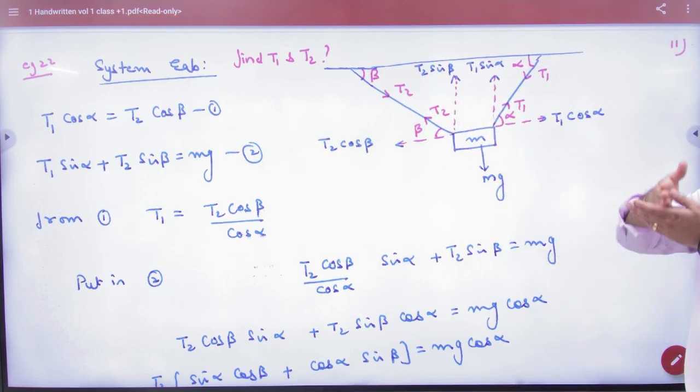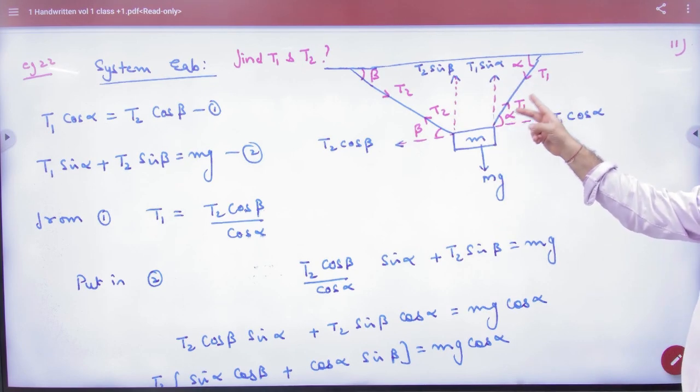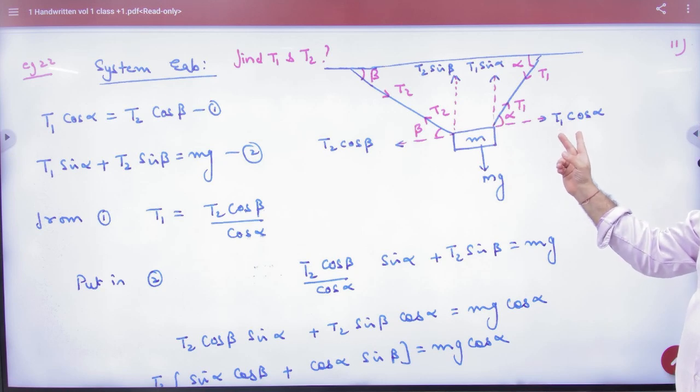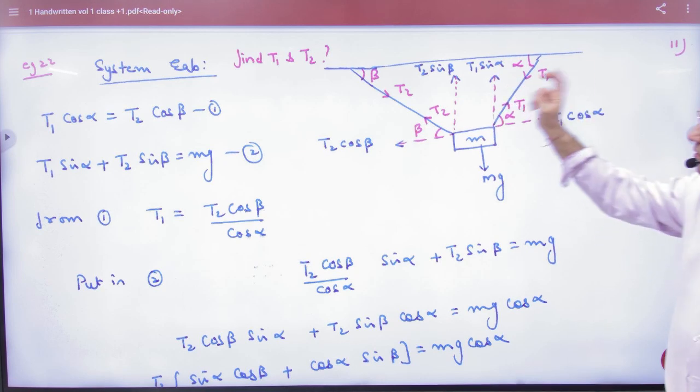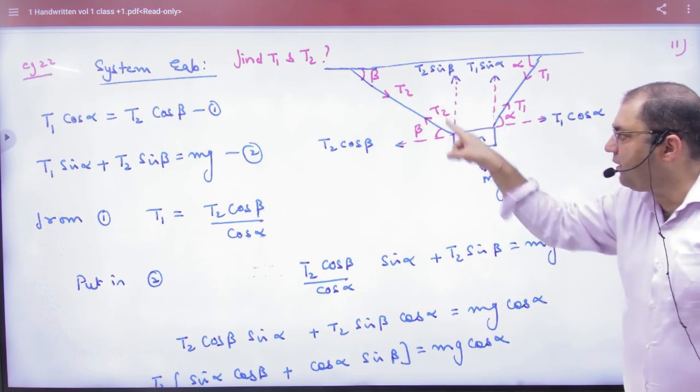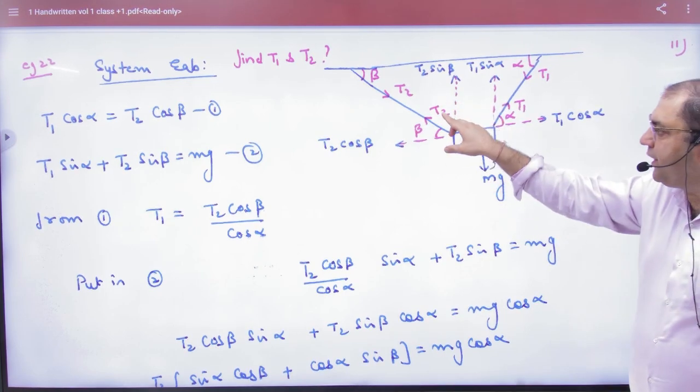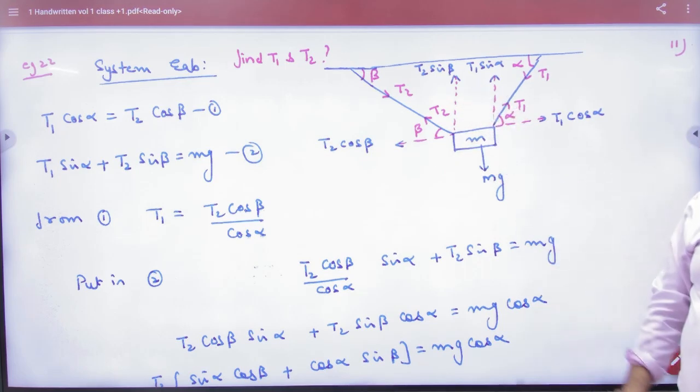When the tension is resolved, its components are made. So T1 cos alpha, T1 sin alpha. Similarly, here is T2 beta, beta is alternate. So T2 cos beta, T2 sin beta.